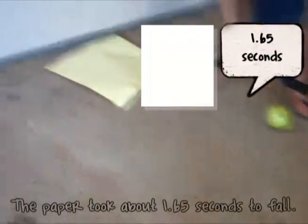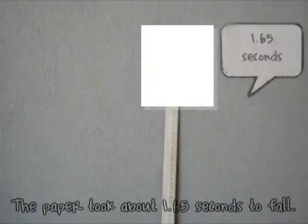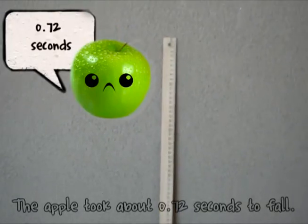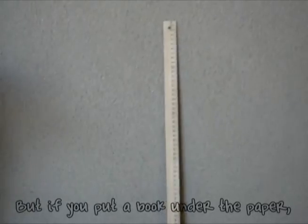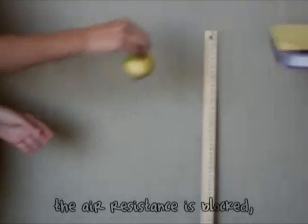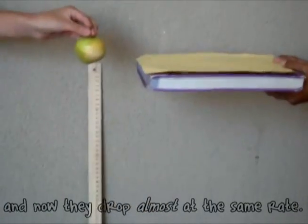The paper took about 1.65 seconds to fall. The apple took about 0.72 seconds to fall. But if you put a book under the paper, the air resistance is blocked and now they drop almost at the same rate.